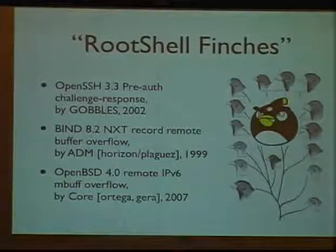Now let's look at extremely impactful bugs in managed languages. Here is a class of bugs where making mallocs while you are parsing is such a big deal, because you are allocating memory and copying bytes — and that's already enough for construction of an exploit. The three examples are: OpenSSH pre-auth challenge response, a bug giving remote code execution pre-auth done by Gobbles in 2002; BIND, which was the mother of all problems for quite a while — a 1999 NXT record buffer overflow; and the OpenBSD remote IPv6/ICMPv6 mbuf overflow giving remote code execution in 2007.